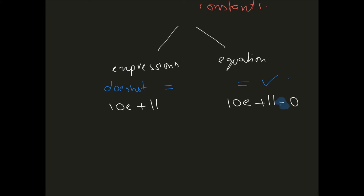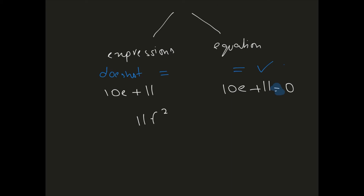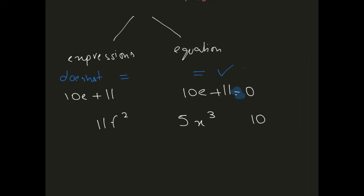For terms like 11f squared, 5x cubed, or 10y, the numbers 11, 5, and 10 are the coefficients, and f, x, and y are the variables. The 2, 3, and — when nothing is written — 1 are the powers. So if no power is shown, the power is understood to be 1.